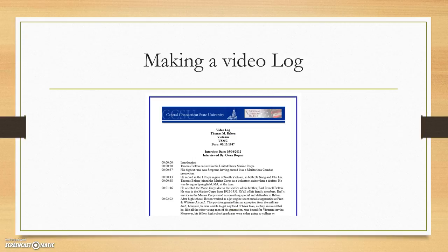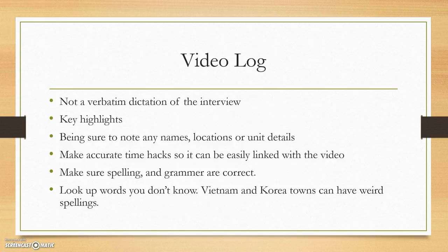The first step in the training process is how to make a video log. A video log is simply a log that follows the discussion of the interview — it's not a verbatim sheet. It covers all the key things in the interview: key highlights, names, locations, and unit details if they use them. Make accurate time hacks, and make sure spelling and grammar are correct in the video log. Look up words you don't know — Vietnam and Korean town names can have some pretty unusual spellings.